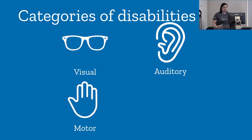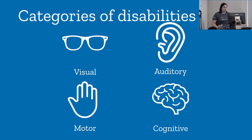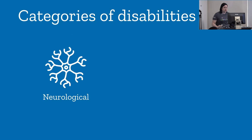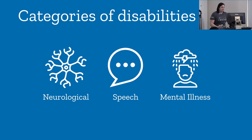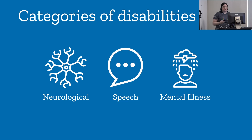According to the accessibility project, there are four different categories of disabilities: visual, auditory, motor, and cognitive. Some other sources also include neurological and speech, and I'd like to include mental illness. Let's look at what these disabilities are, how they affect how disabled folks interact with your app, and what tools Android provides to assist them.